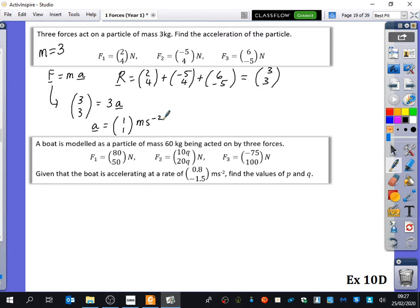Same process in the next question, apart from the unknown is inside one of the forces. So I always like to jot down what the mass is, so I no longer even really need to read the question. A boat is modeled as a particle of mass 60 kilograms is being acted on by three forces, F1, F2, and F3. Given that the boat is accelerating at a rate of (0.8, -1.5), find the values of P and Q.